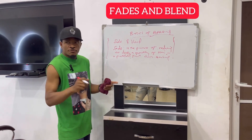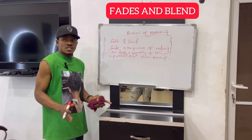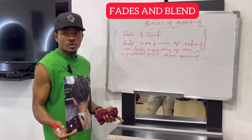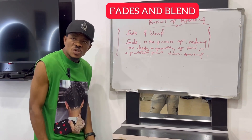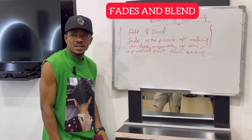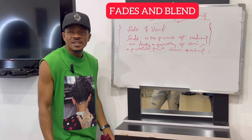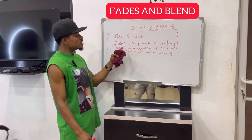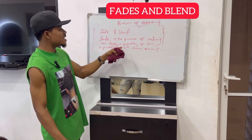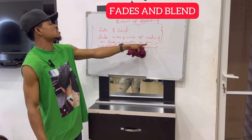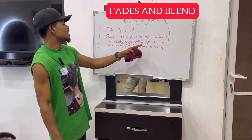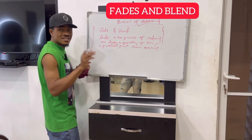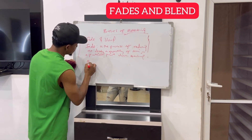For example: he used to be an active footballer but now he's fading. The jeans were so dark but gradually faded and the darkness reduced. So fading is the process of reducing the density or quantity of hair in a particular part — that is fading. Then blending.